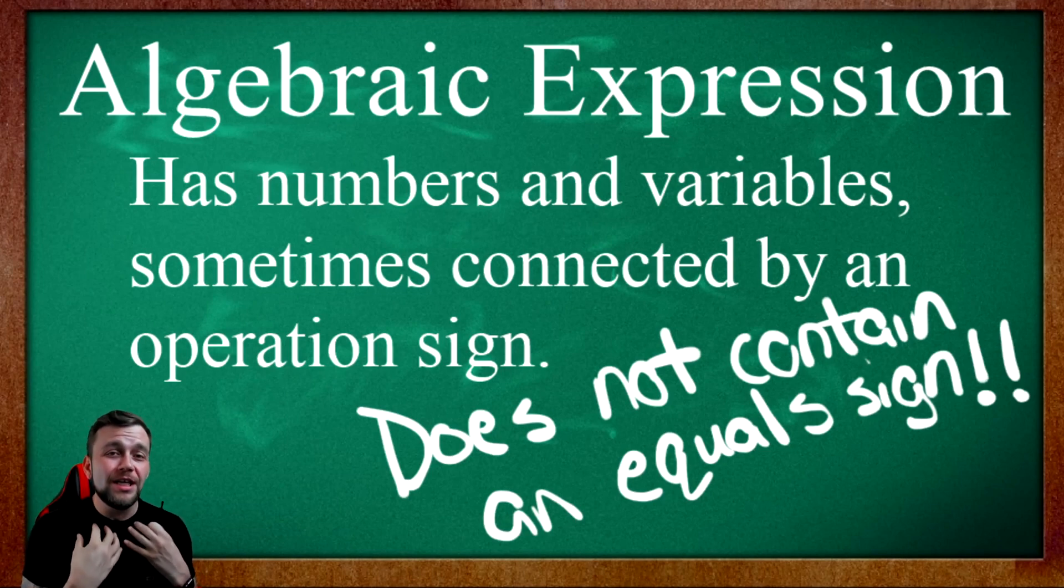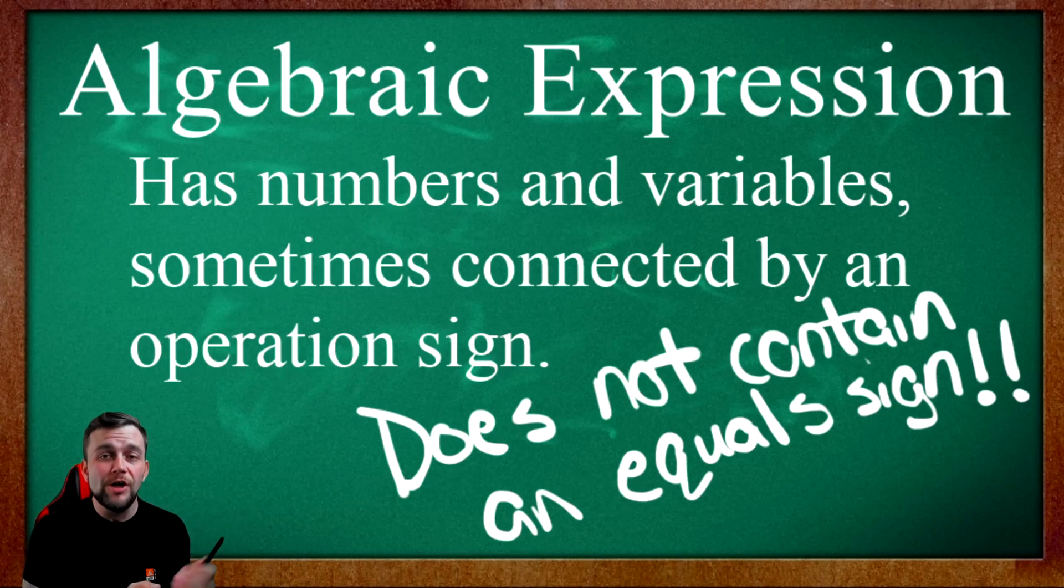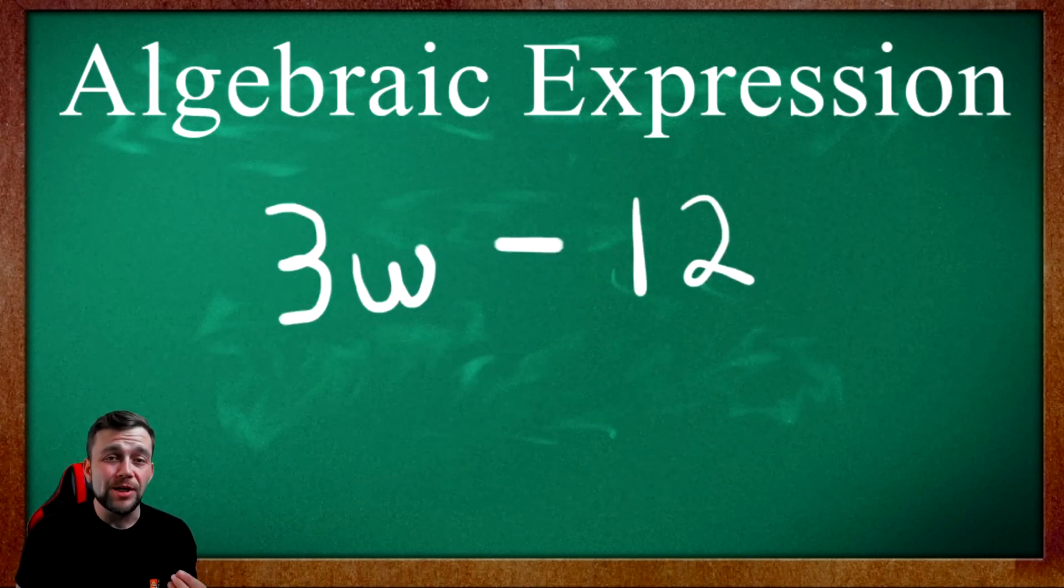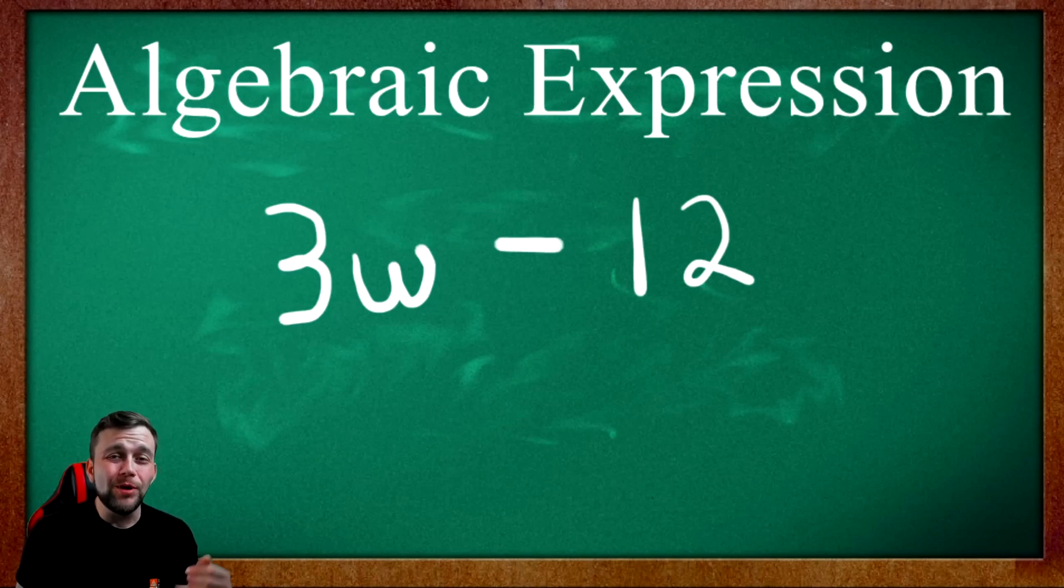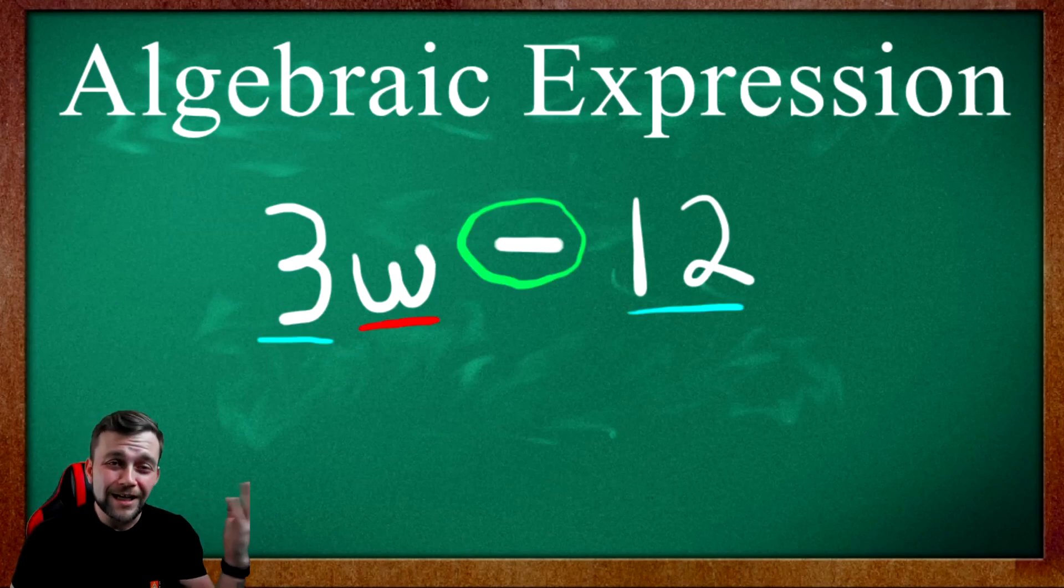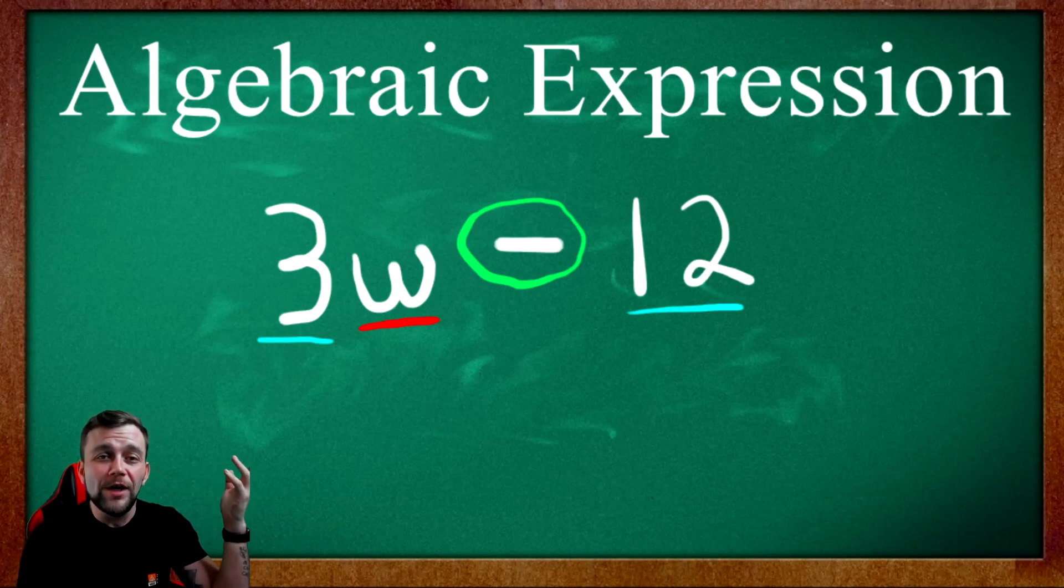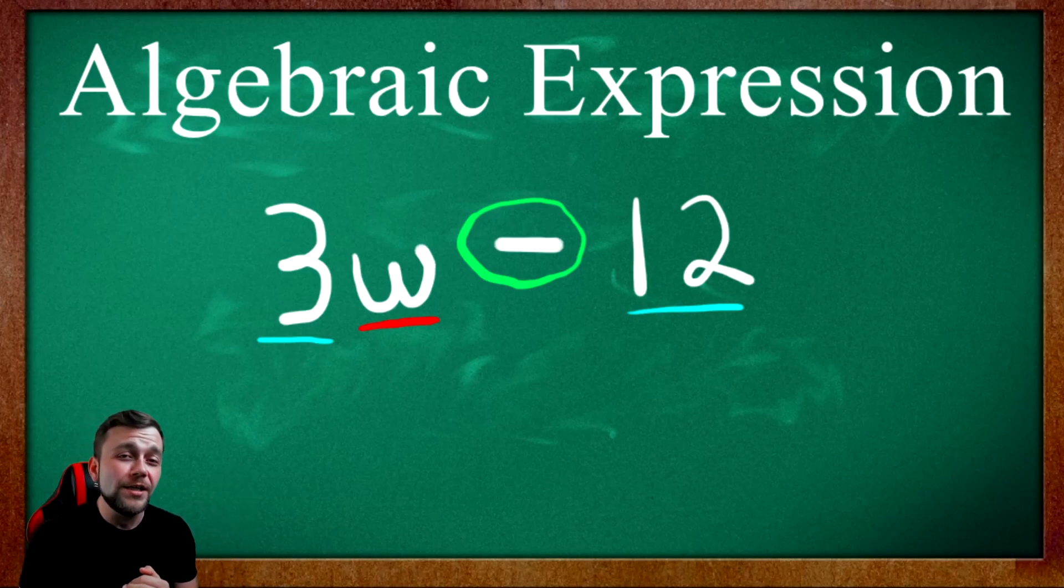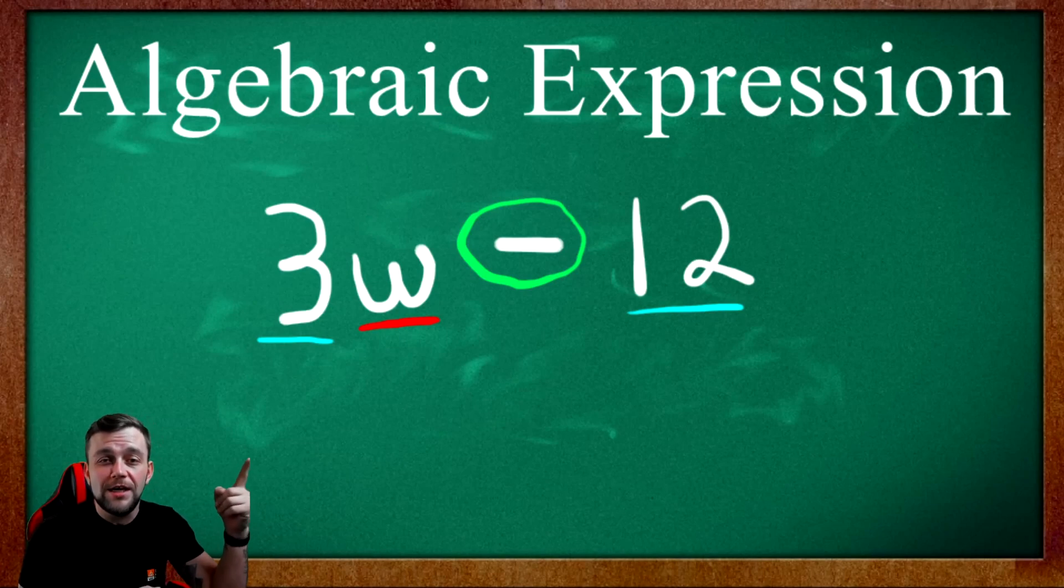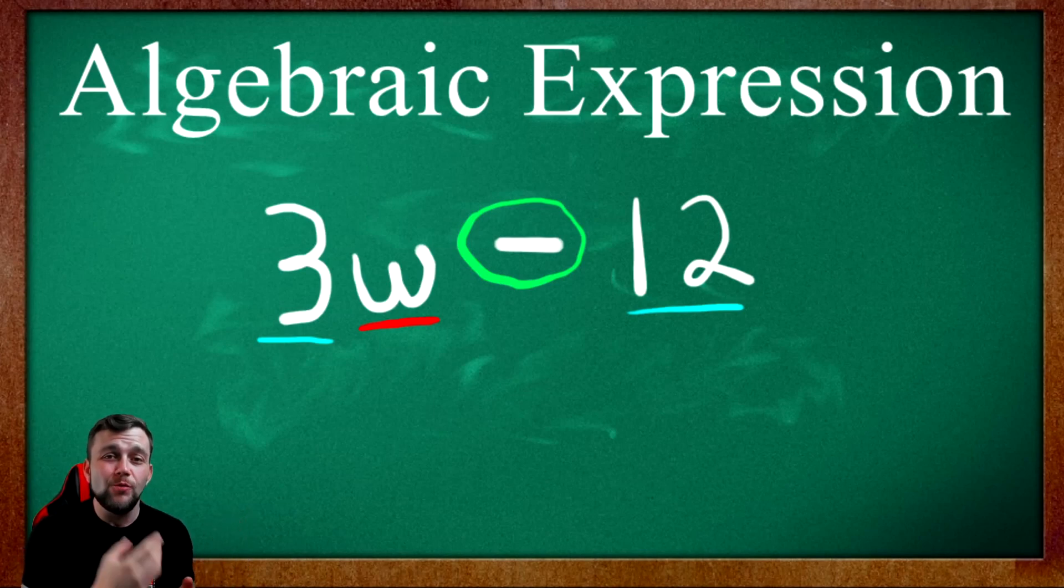Let's get into some examples so you can really see what's happening when we're talking about these expressions. Here we have our first example of an algebraic expression. I'll underline the numbers with blue, the variable with red, and I'll circle the operation sign with green. The really important thing with algebraic expressions is the terminology and the language behind them. There are different ways of saying this algebraic expression. I could say 3w minus 12, or I could say 12 less than the product of 3 and w.